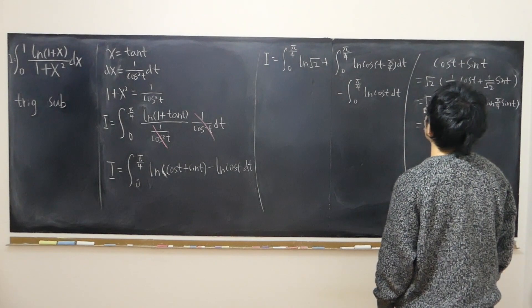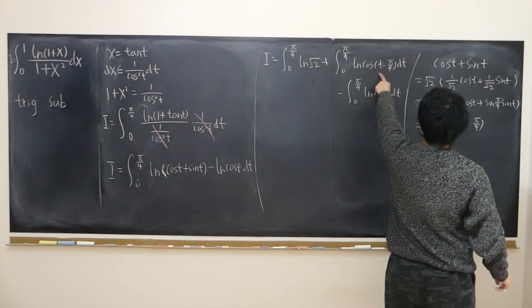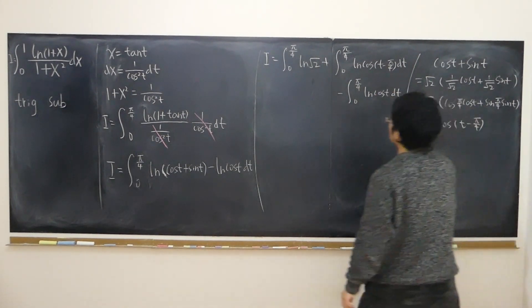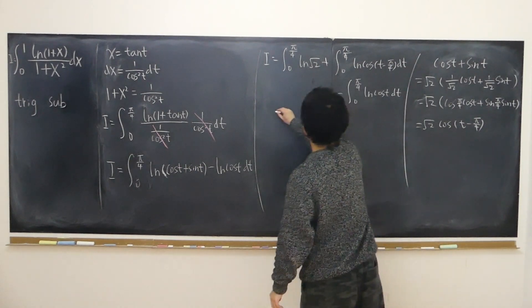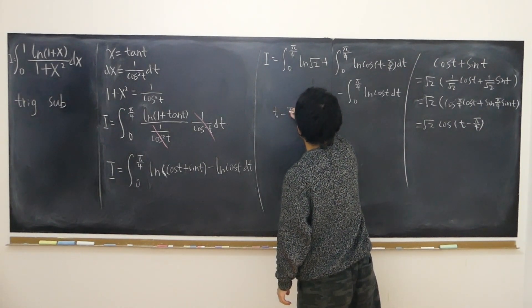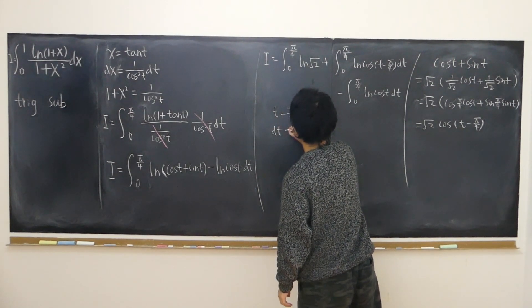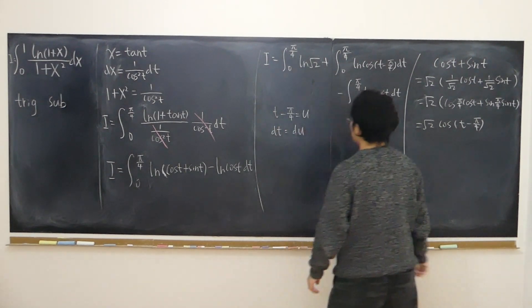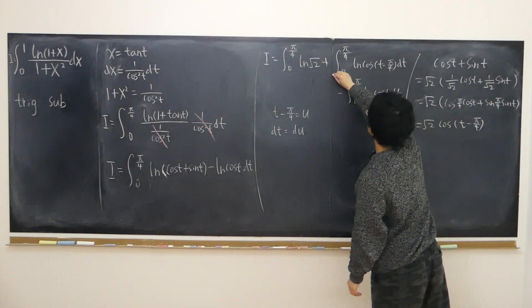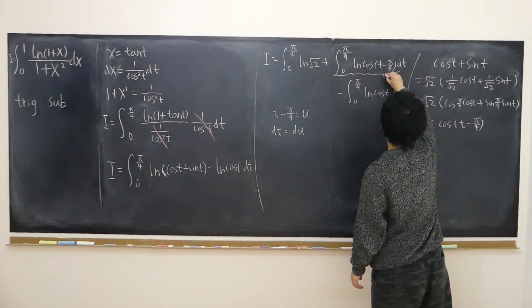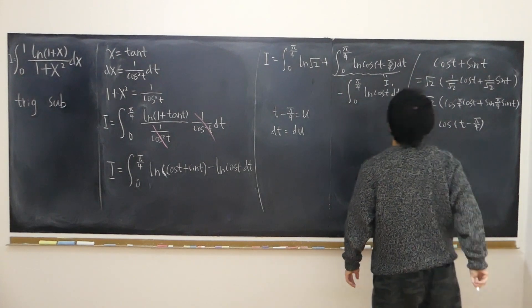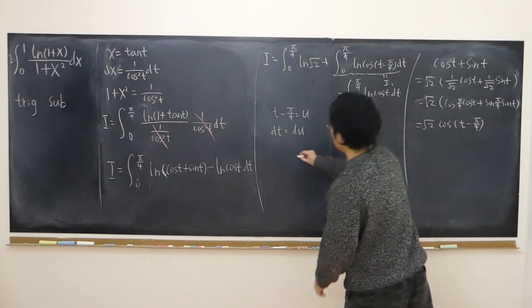Then I can simply change this quantity, t minus pi over 4 equals u. The dt is now du. This, let's call that i1. This integral i1.